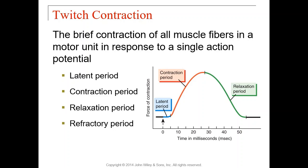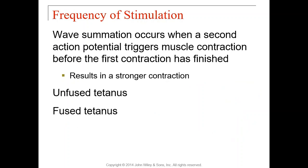We learn a lot about muscle cells by studying a single cell's contraction. A single muscle contraction of a single cell is called a twitch — a brief contraction. When you look at a twitch you can see all the steps of muscle contraction, which break down into three major periods shown on a chart: the latent period in blue, the contraction period in red, and the relaxation period in green.